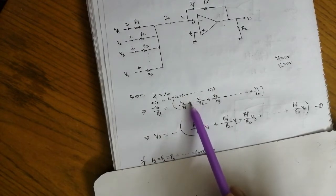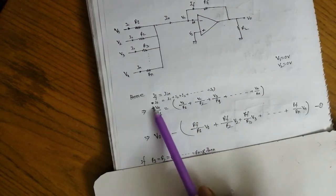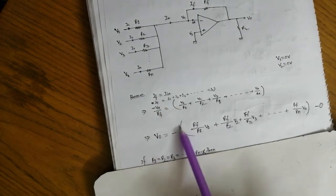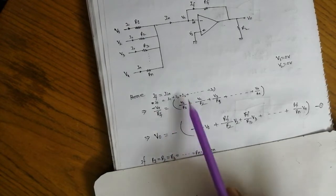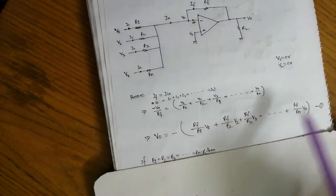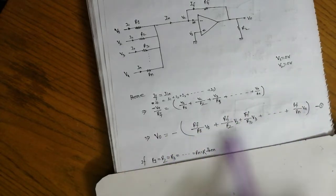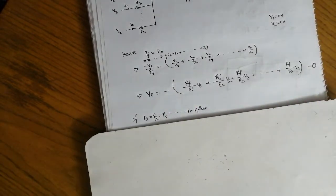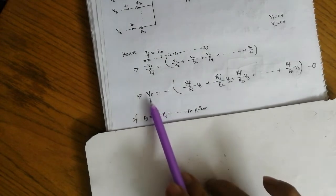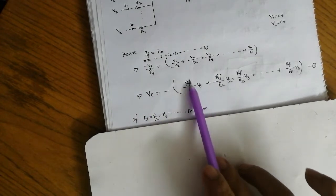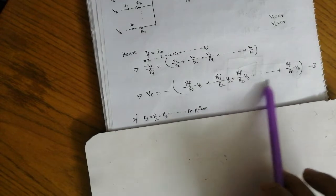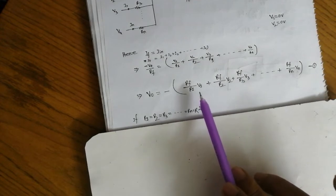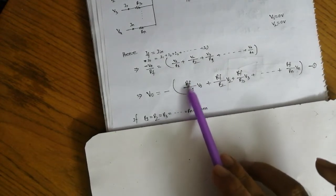Taking the right-hand side with a minus sign, the general output equation becomes: V0 equals minus times (Rf/R1·V1 + Rf/R2·V2 + Rf/R3·V3 + ... + Rf/Rn·Vn). This is the general equation for the summing amplifier. A special case is when all the Rf/Ri ratios equal 1.